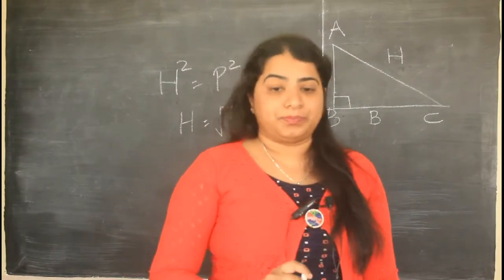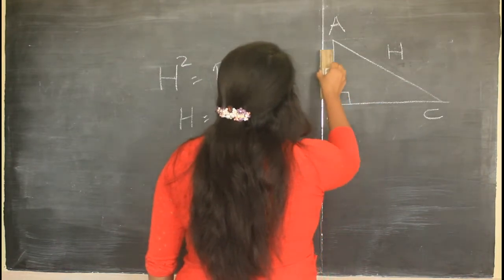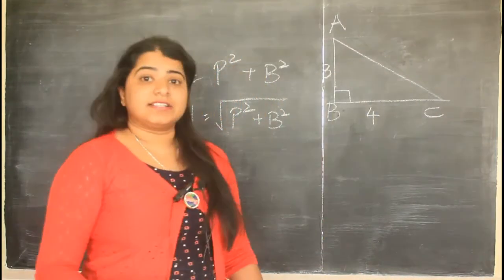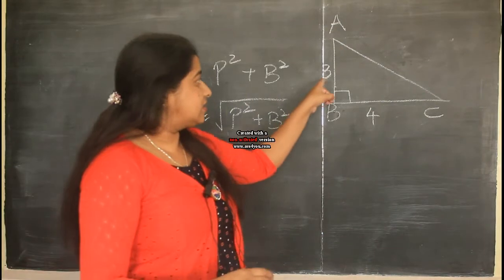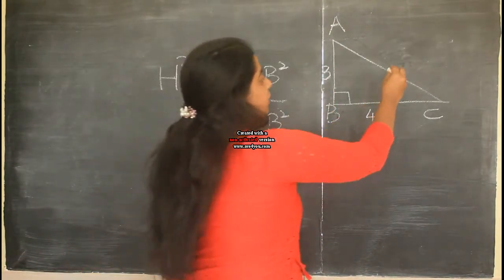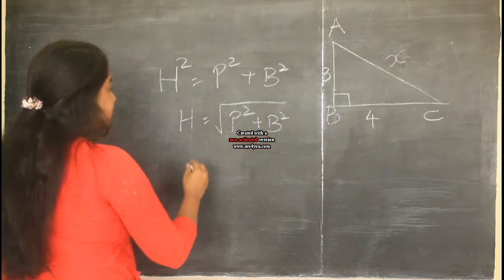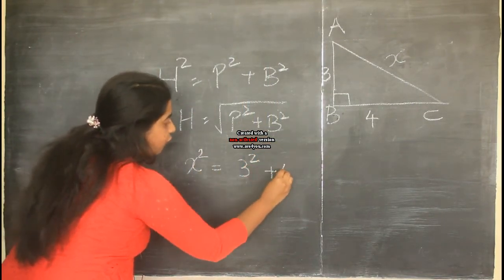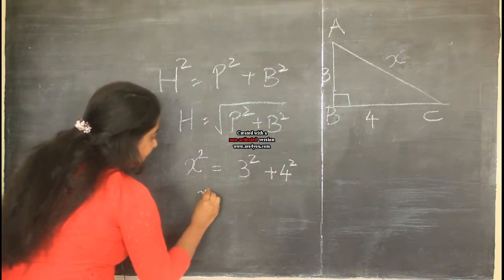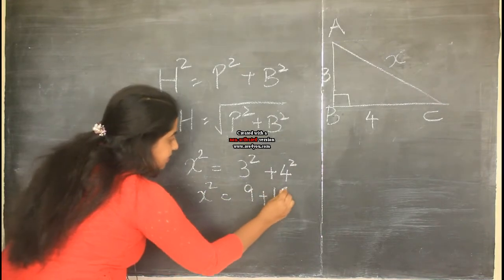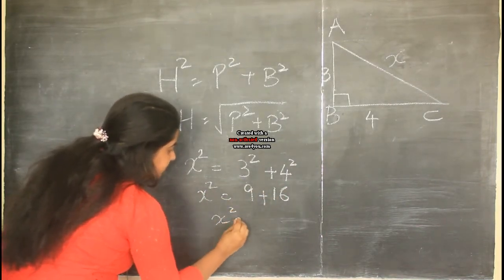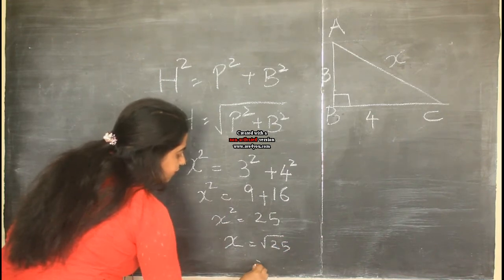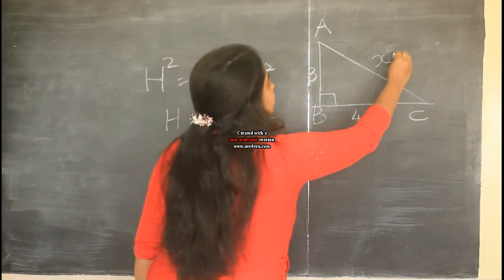Now let us solve a simple problem. Here, the perpendicular is 3 and the base is 4. You need to calculate the hypotenuse, which is x. So let us substitute: x² = 3² + 4², which gives x² = 9 + 16 = 25. Therefore x = √25 = 5. So the value of x is 5.